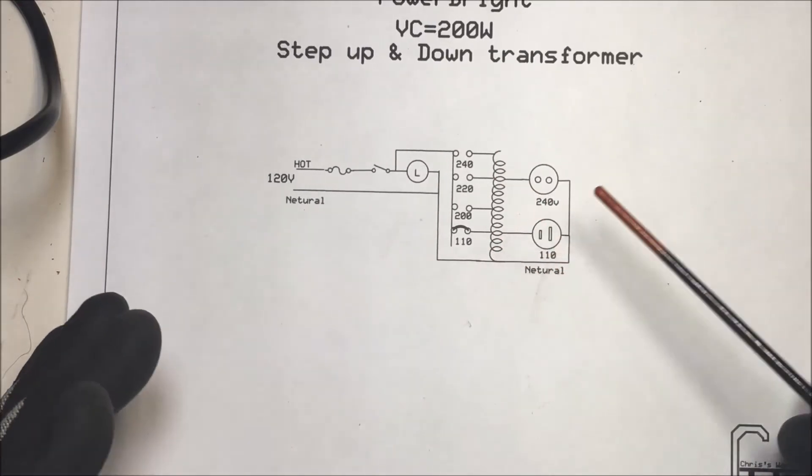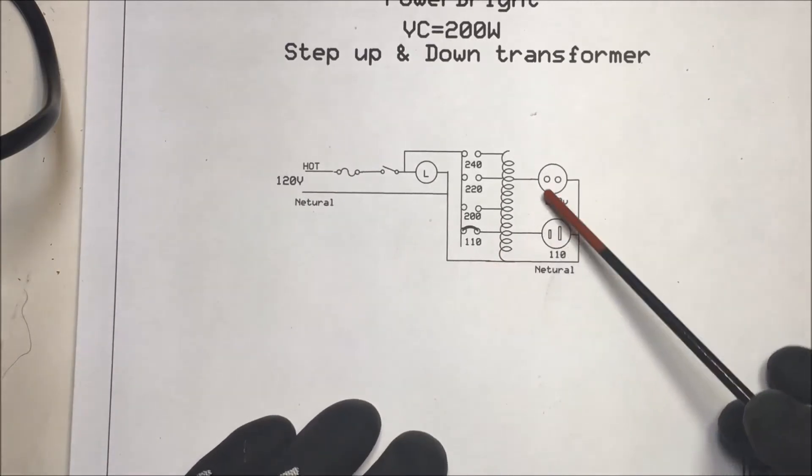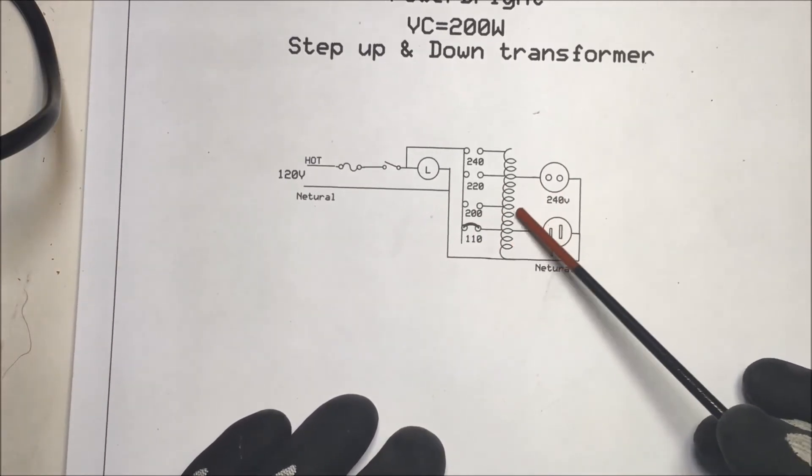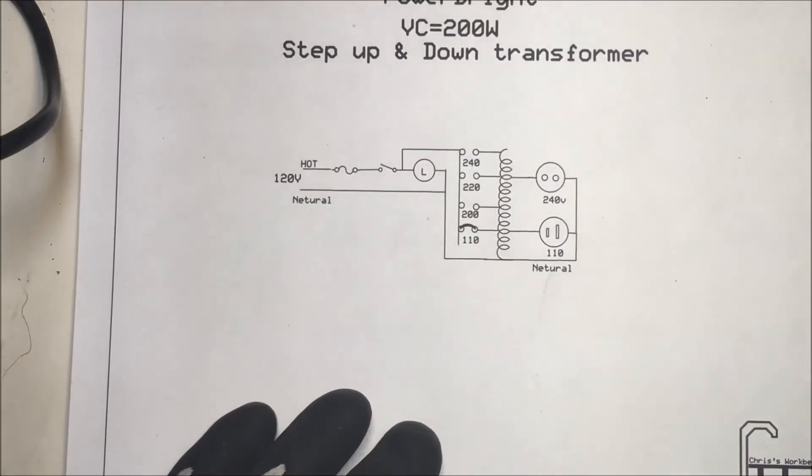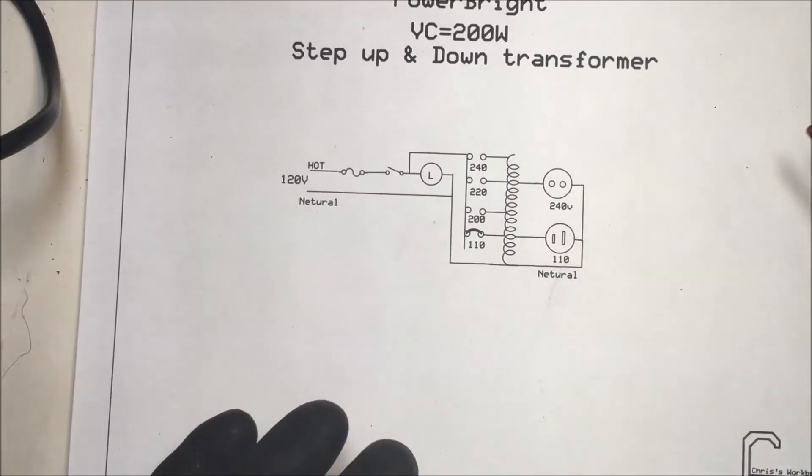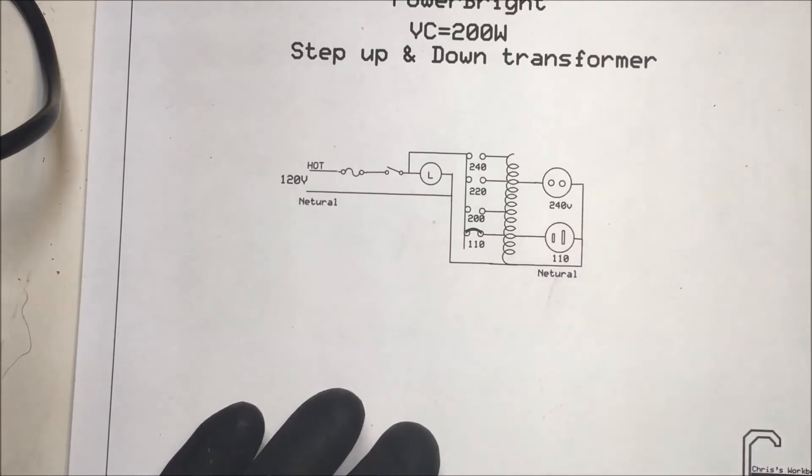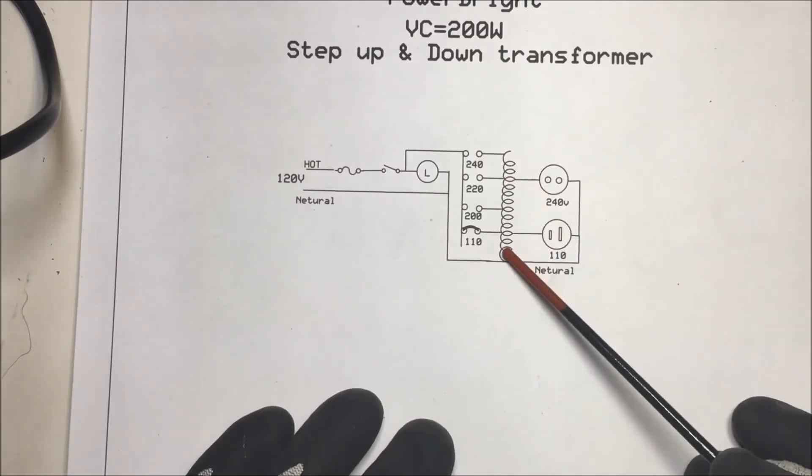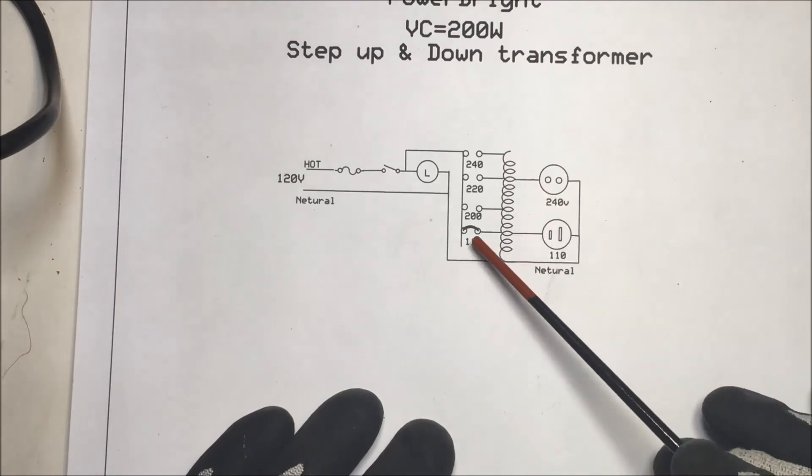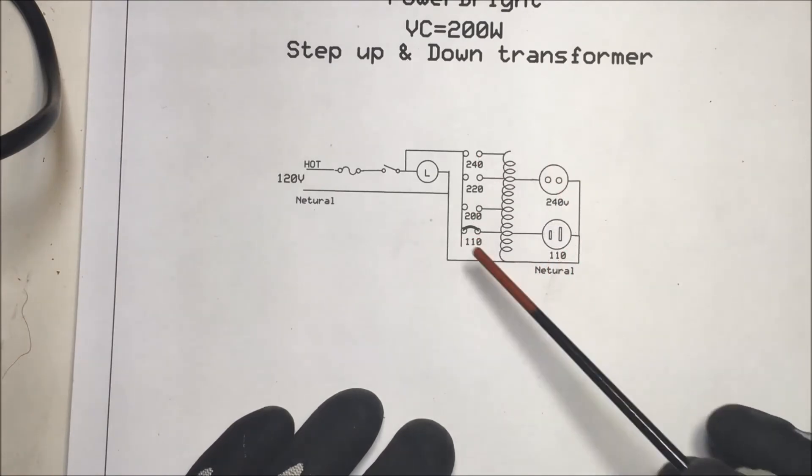With an auto transformer you have to be careful because it's not isolated, it's not an isolation transformer. I wouldn't, you got to be careful when you're probing it with your scope. But that's all there is to it, just a simple one coil and then they have some taps in here.